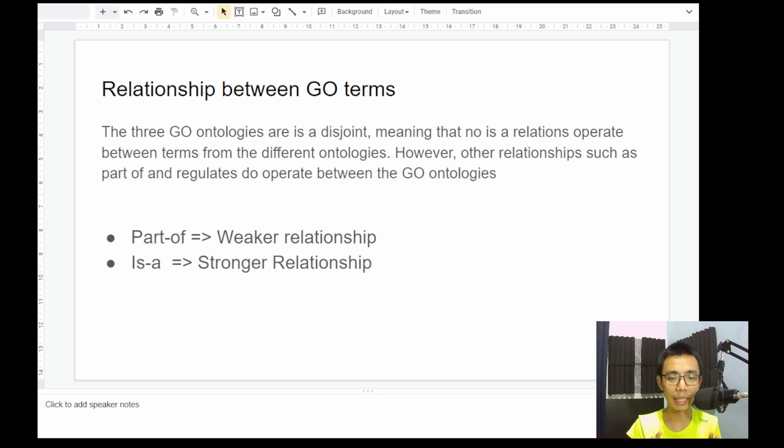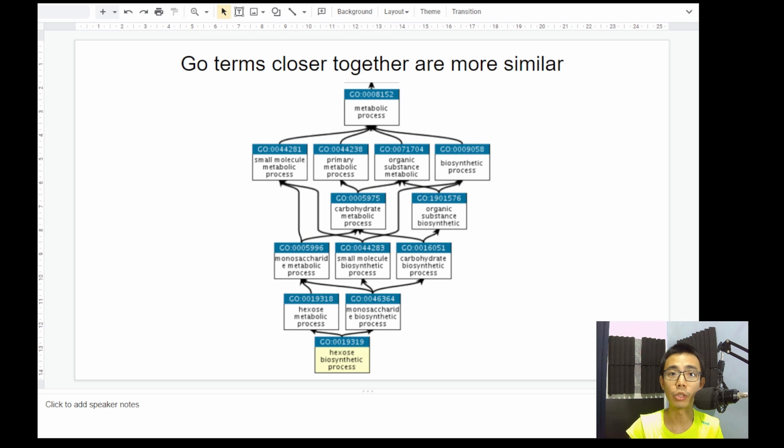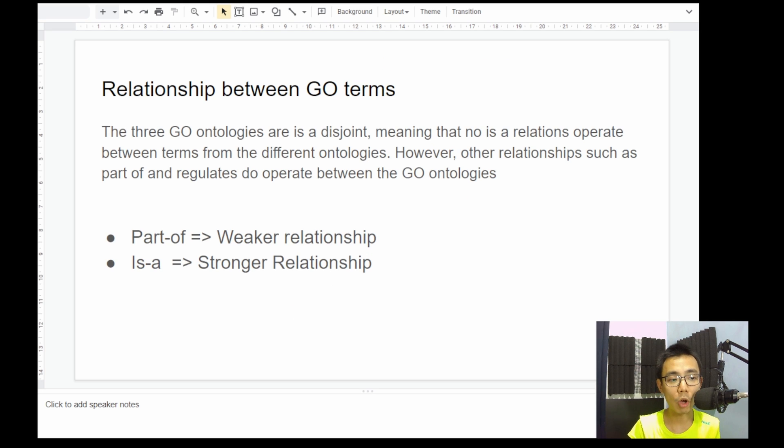Okay, so there are also relationships in between each term, for example, part-of and is-a. So this is not true, just going to give you an example. There can be something like hexose metabolic process, it's part-of the monosaccharide, but is-a small molecule biosynthetic process, something like that, where part-of signifies a weaker relationship between the two chains, and is-a signifies a stronger relationship between the two chains or the two terms.